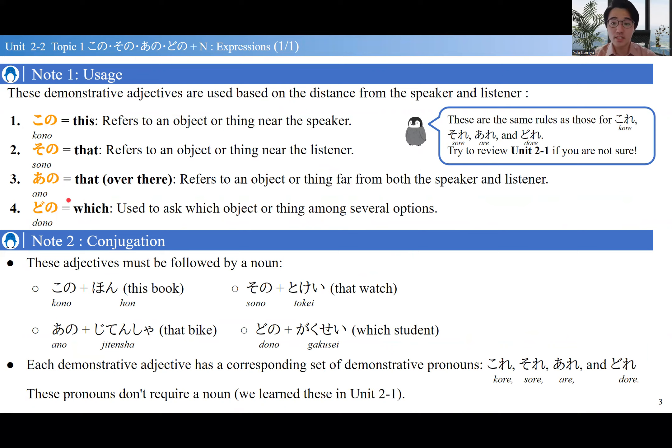The same rules apply to この、その、あの、どの. If you don't remember these rules, you can go back to Unit 2-1 and review. この plus something is used for something that is close to the speaker.